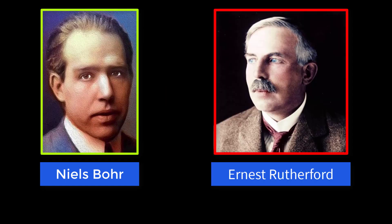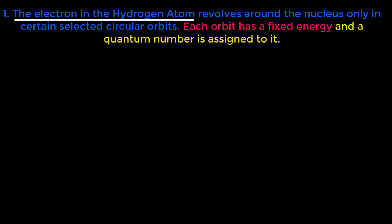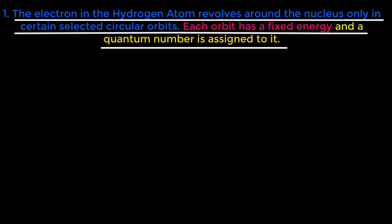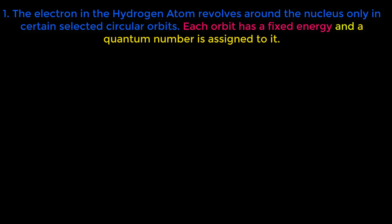The first postulate of Bohr's atomic model is: the electron in the hydrogen atom revolves around the nucleus only in certain selected circular orbits. Each orbit has a fixed energy and a quantum number is assigned to it. Look at this word circular orbits.